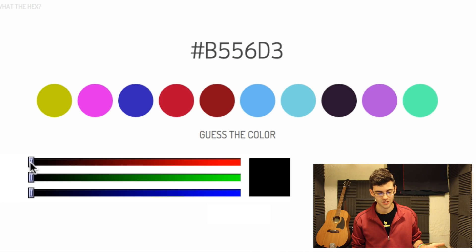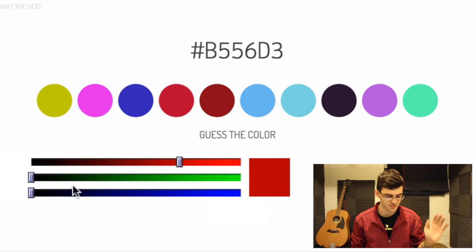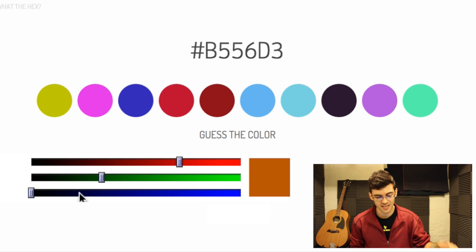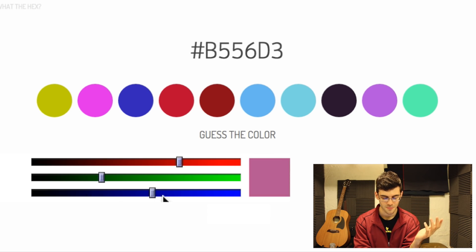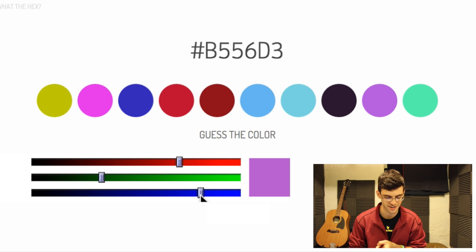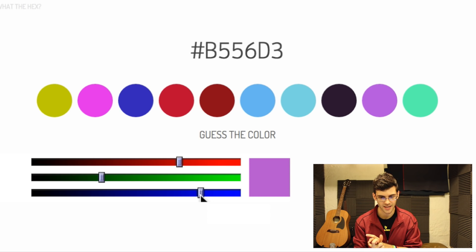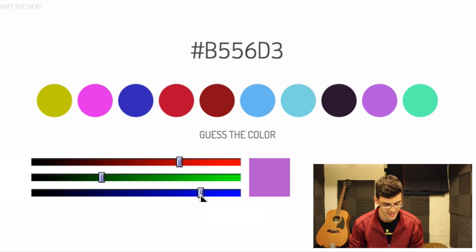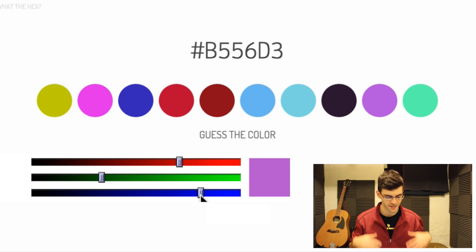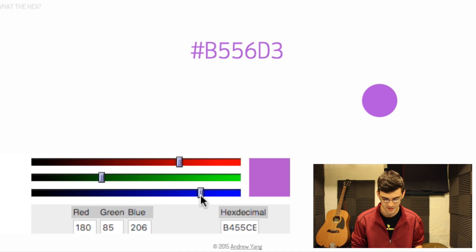Let's do another one. B5 for red means about 75% red. 56 for green means about 30% green. D3 for blue means about 85% blue. So we have 75% red, 30% green, and 85% blue — mostly blue and red, which together make magenta, but with a tiny bit of green in it. It's either going to be second from the left or second from the right. The second from the left looks like pure full magenta, but we know green is influencing it, so I'll click second from the right — and there we go.